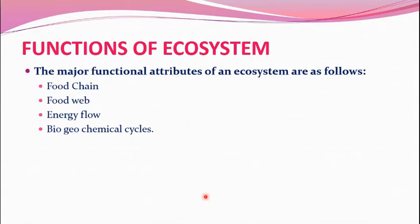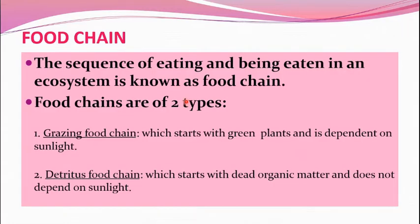Functional components of ecosystem: the major functional attributes are food chain, food web, energy flow, and biogeochemical cycles. Food chain is the sequence of eating and being eaten in an ecosystem. Food chains are of two types: grazing food chain, which is more predominant in this world, and detritus food chain.